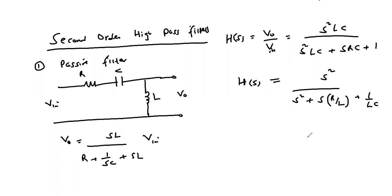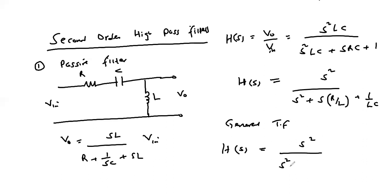The general transfer function of a second order filter is given by H(s) equals s² over s² plus s(ω₀/Q) plus ω₀², where ω₀ is the cutoff frequency and Q is the quality factor.